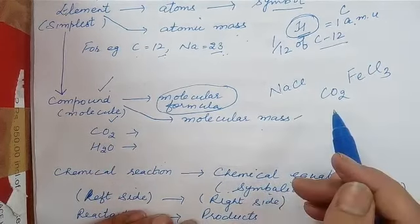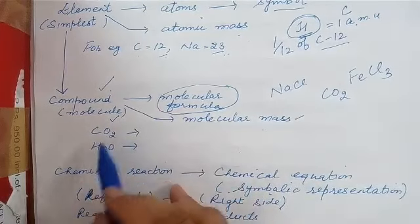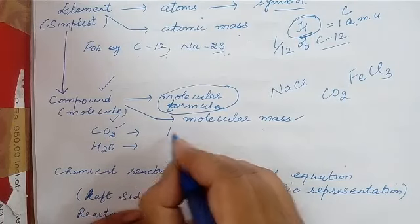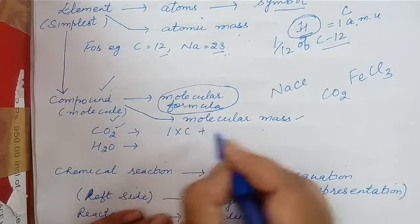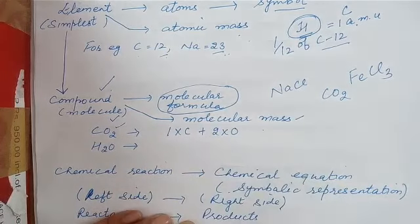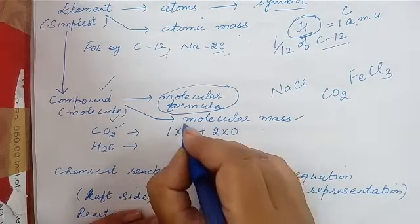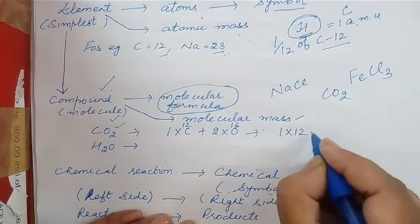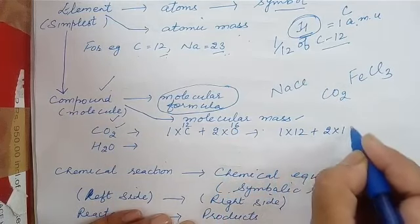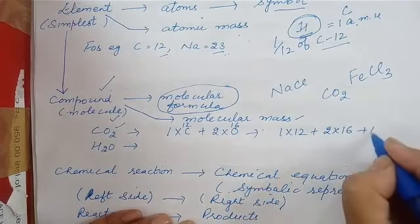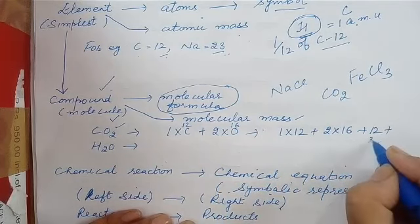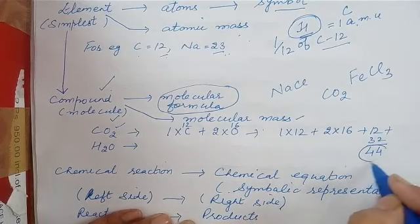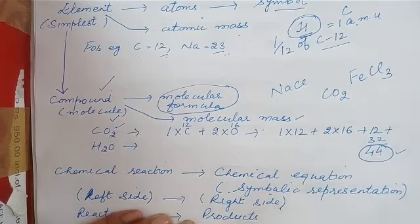For example, if we want to calculate the molecular mass of carbon dioxide: CO₂ has one atom of carbon plus two atoms of oxygen. The atomic mass of carbon is 12 and oxygen is 16. So: one times 12 plus two times 16 equals 12 plus 32, giving a molecular mass of carbon dioxide equal to 44.